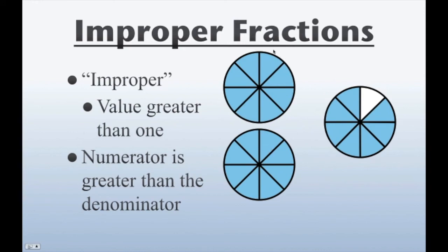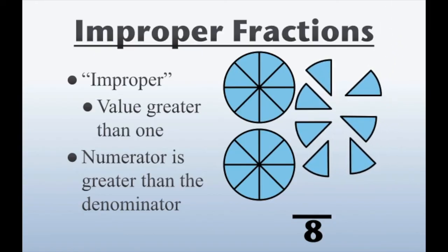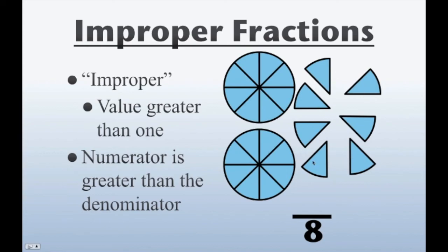How about here? Well, we have two wholes, one hole here and one hole here. Each of them has 8 pieces — counting all the way through, 8 and 8. And this one doesn't have a total of 8 pieces that are filled, it only has 7. So, we're talking about eighths, so our denominator is going to be 8. How many eighths do we have? We have a total of 8 here, 8 here, and 7 here. And that makes a total of 23 eighths. So all together here we have 23 eighths.